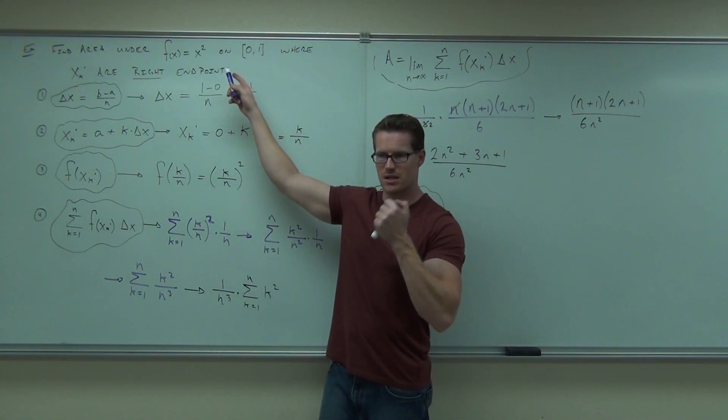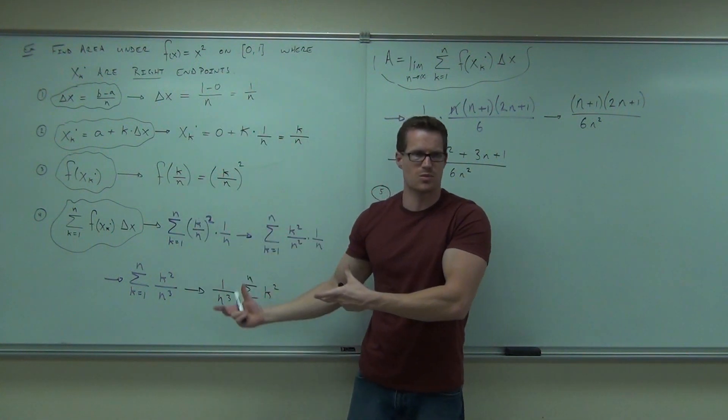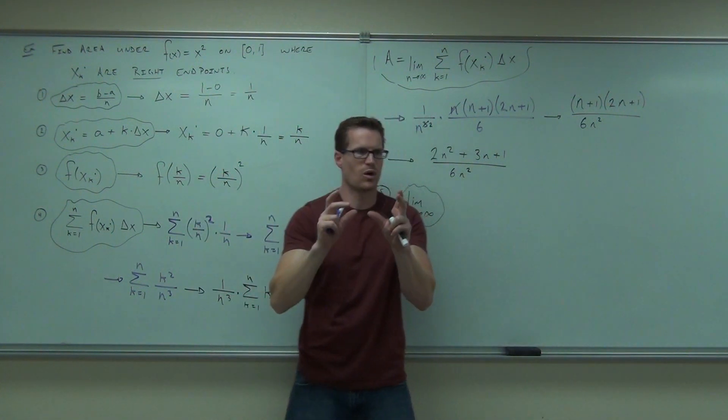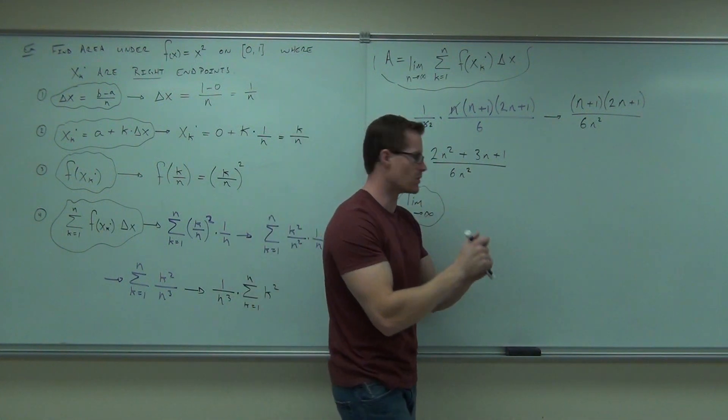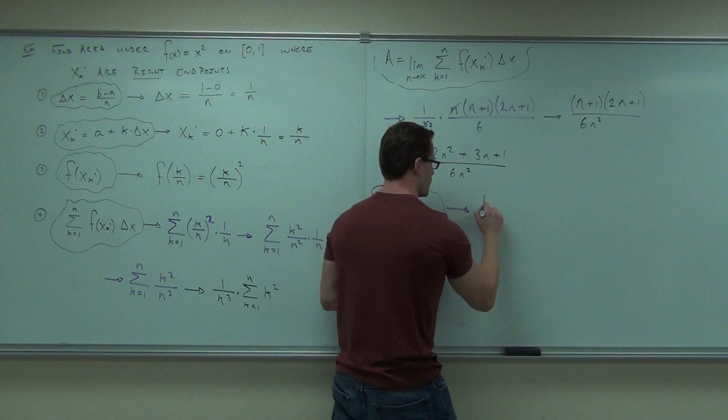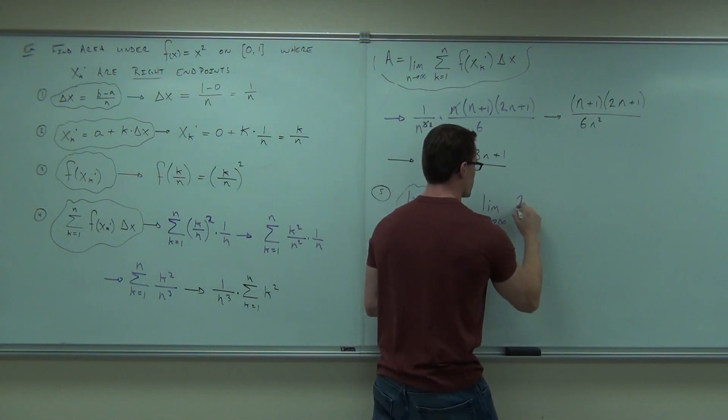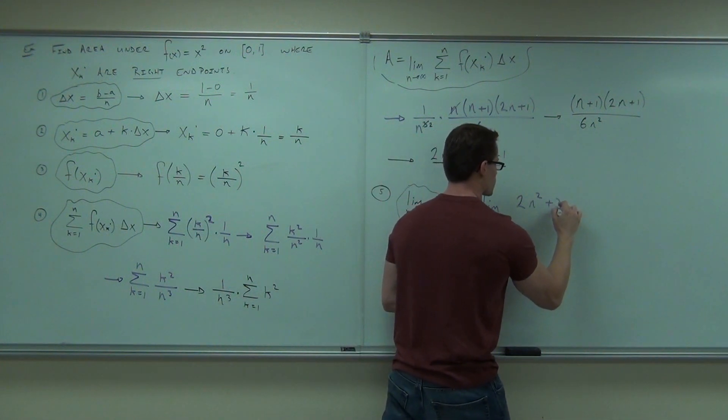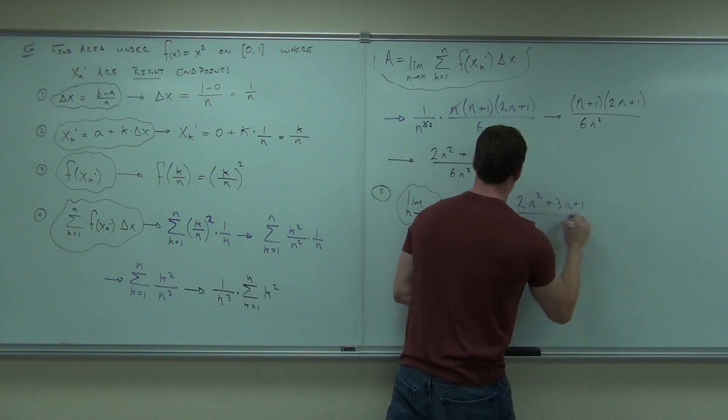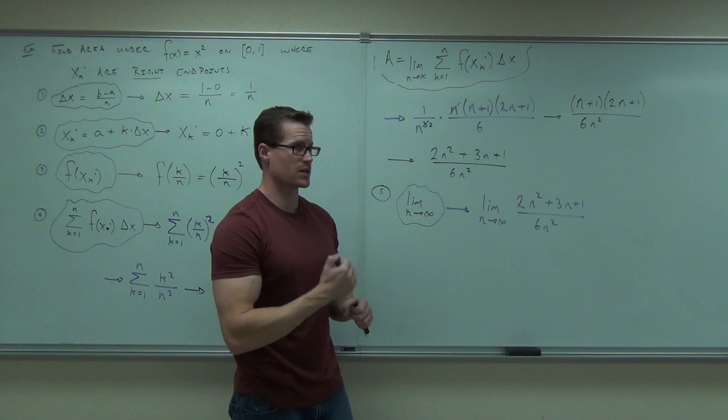If you're going to numbers, you need to end with a number, right? If there was x's up here or anything, you'd have x's within your problem, but we don't. We're going from 0 to 1. That's called a definite integral. You get the number. So we'll take a limit as n goes to infinity. And if you remember anything about limits, which is why we did this. It was just a little while ago. 2n squared plus 3n plus 1 over 6n squared.